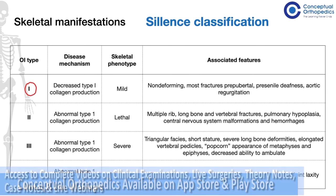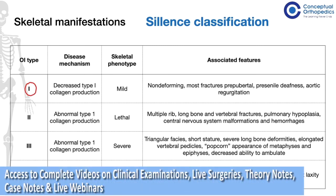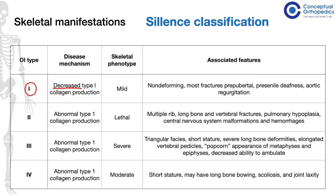In type 1, there is a quantitative problem with collagen production. We see a decrease in the amount of type 1 collagen production. In spite of the decreased production, the remaining type 1 collagen which is produced is of normal quality, and hence these children have a normal or mild skeletal phenotype with fewer fractures sustained during their lifetime.